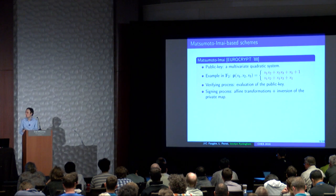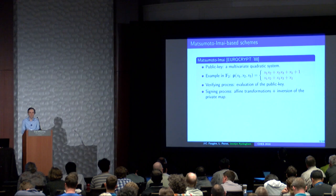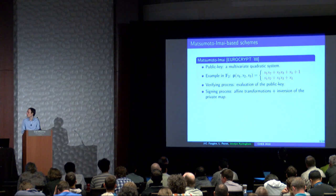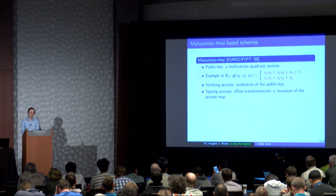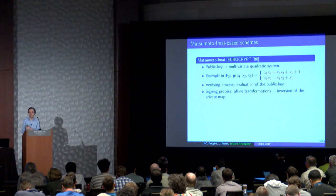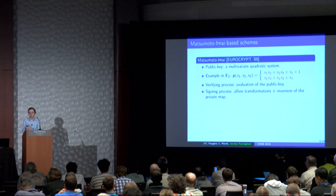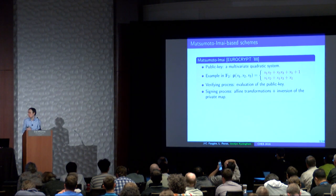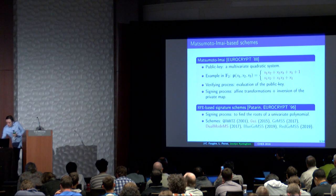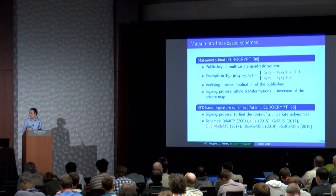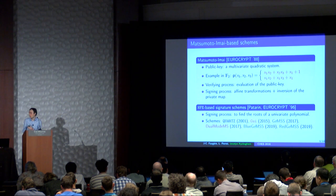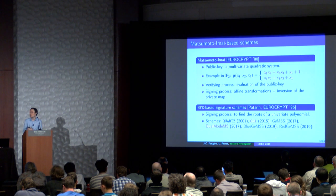What is the Matsumoto-Imai-based scheme? The idea is the public key is a multivariate quadratic system in GF(2) in our case. The verifying process consists of evaluating this system. For the signing process, we need to invert the public key. The public key is a composition of affine transformations and a special trapdoor which generates a secret system. To invert the public key, we need to invert the affine transformation and invert the trapdoor of the secret multivariate quadratic system. For HFE-based signature schemes, the inversion of the trapdoor reduces to finding the root of a univariate polynomial in GF(2^N)[X].